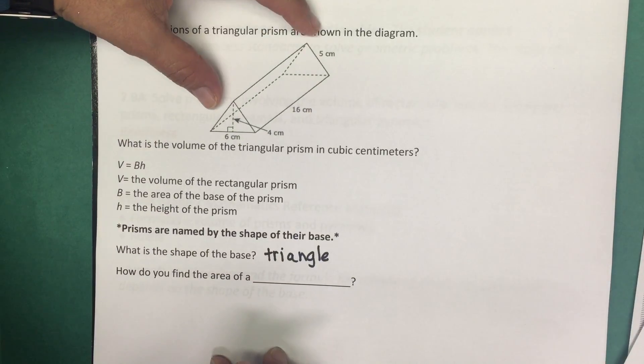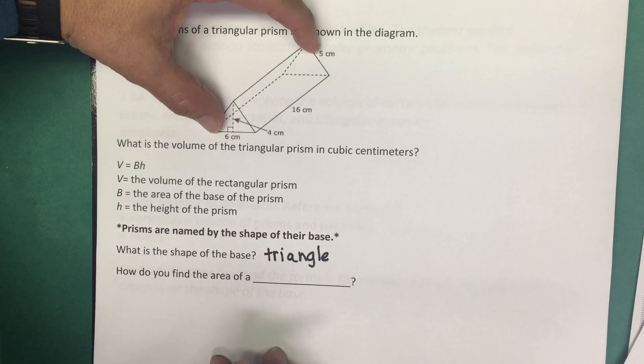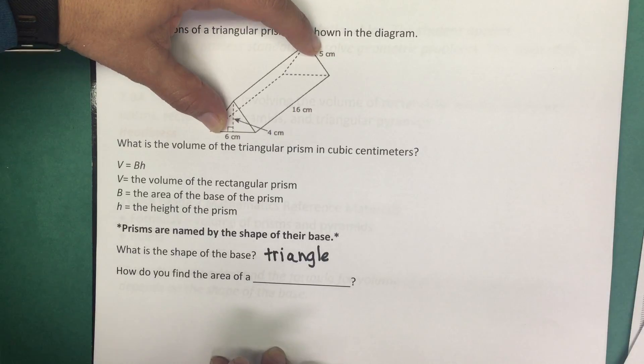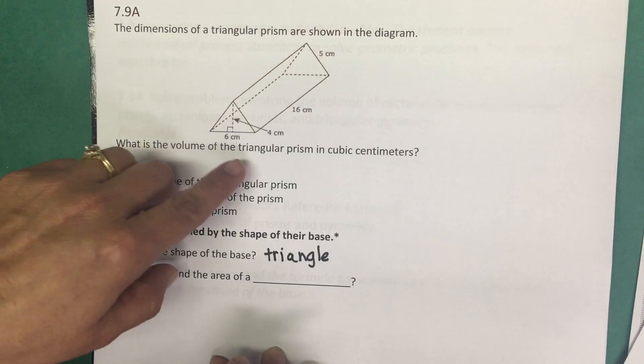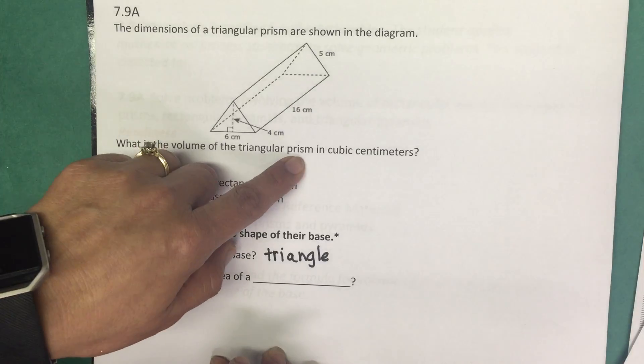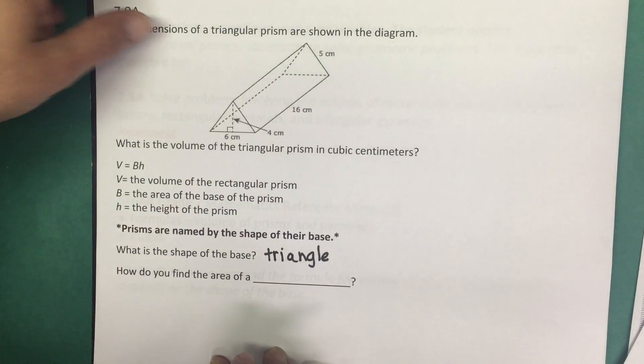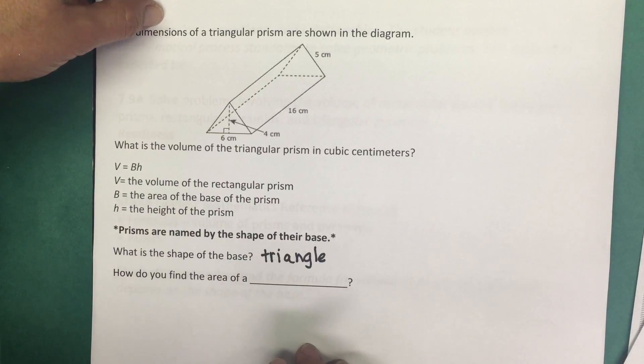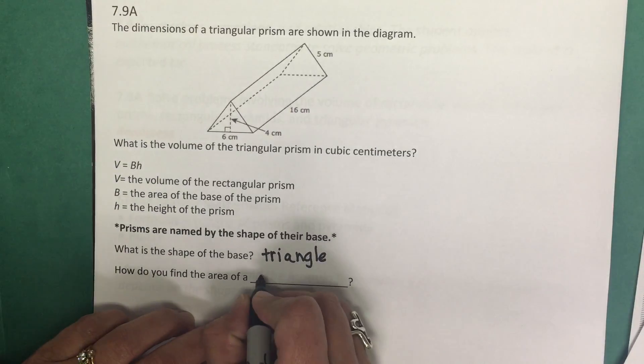And here's the picture where you can see that we have triangular faces that are parallel to each other, and that's another way that we can tell that those are the bases. And again, like I said, prisms are named by their bases. So since we're told triangular prism, the base is going to be a triangle. So how do we find the area of a triangle?